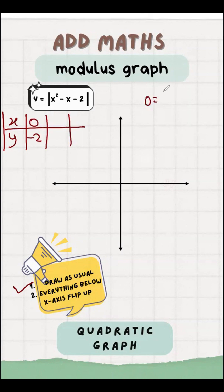y equals to 0, I do factorization. x is 2, x is minus 1. Label.